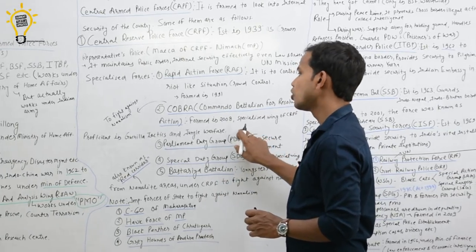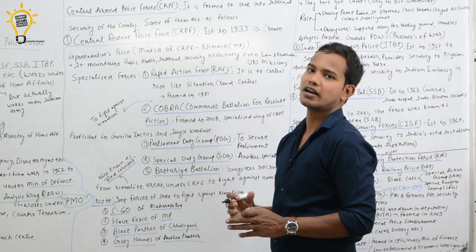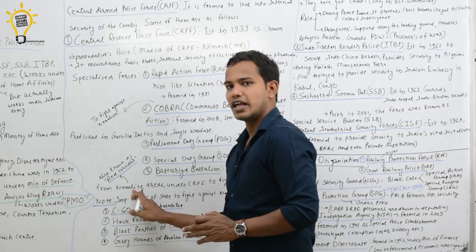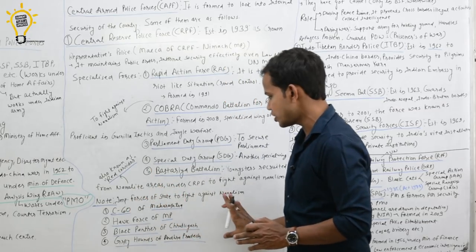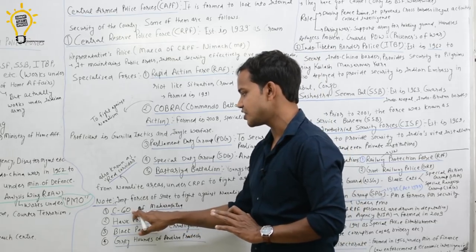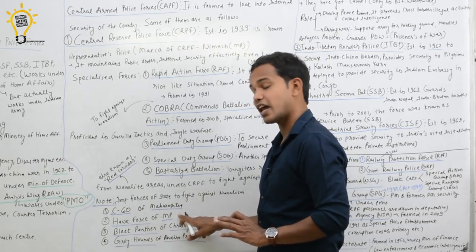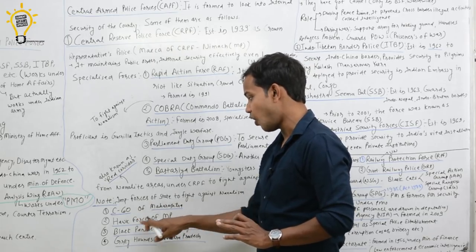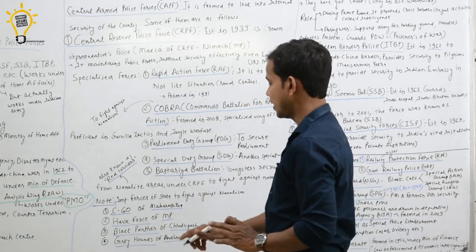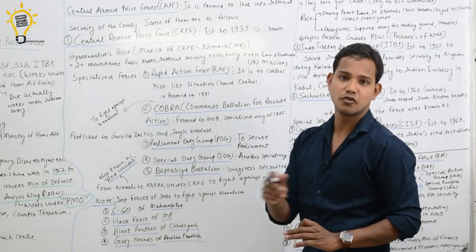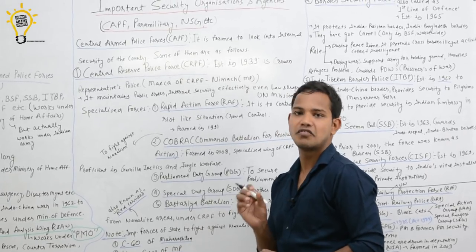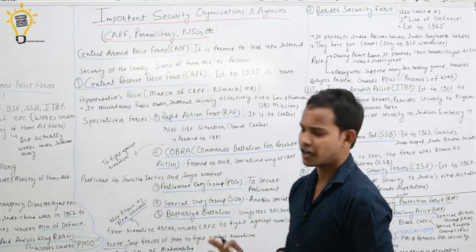Apart from this, Parliament Duty Group is also a CRPF wing whose main work is to protect the Parliament area. There is also Special Duty Group. Apart from these, in the red corridor area, naxal-affected area, some state governments have important forces fighting naxalism, which do not come under CAPF. Such as C60 of Maharashtra, Hawk Force of Madhya Pradesh, Black Panther recently created by Odisha - all specialized forces to fight naxalism. Another one is Greyhound, an old force, commandos created by Andhra Pradesh, specialized commandos to fight against naxalism. Very helpful, very successful, the Greyhound model of Andhra Pradesh.